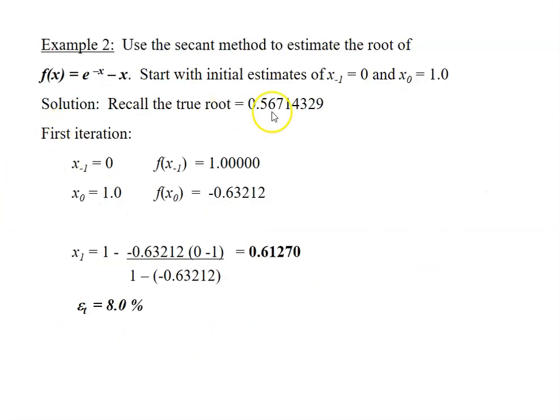Let's look at an example here. Use the secant method to estimate the root of this function. Start with the initial estimates of xi minus 1 equals to 0 and x0 equals to 1.0. So as you can see in this example, the question actually provide the true root for the function, which is this value.